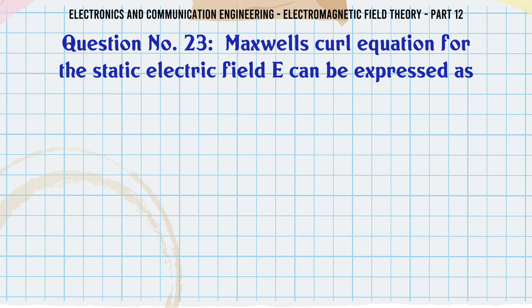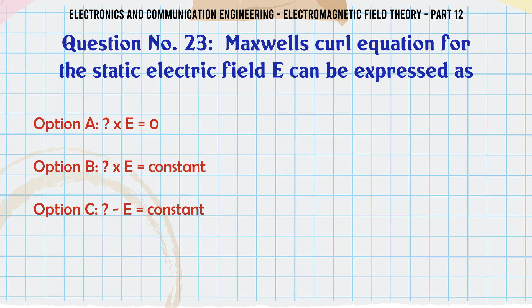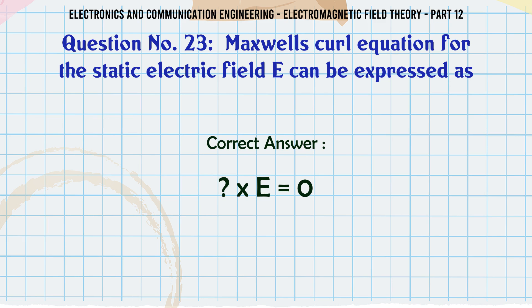Maxwell's curl equation for the static electric field E can be expressed as: A. ∇×E = 0, B. ∇×E = constant, C. E = constant, D. E = 0. The correct answer is ∇×E = 0.